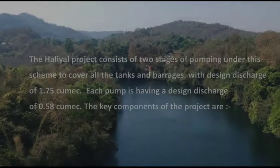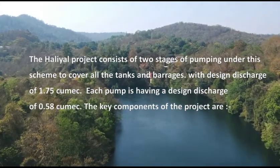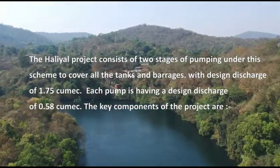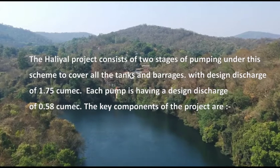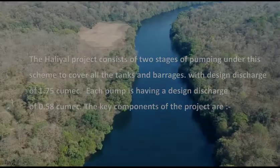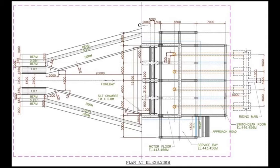The Halial Project consists of two stages of pumping under this scheme to cover all the tanks and barrages, with a design discharge of 1.75 cubic meters per second. Each pump has a design discharge of 0.58 cubic meters per second. The key components of the project are the intake canal, 4 bays of 20 meter length, and the pump sump. A trash rack is provided for each bay. A silt trap is also provided to trap silt before entering the bay, and the rising main.